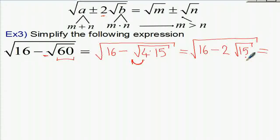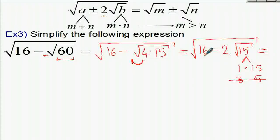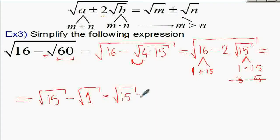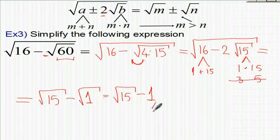We need two numbers whose product makes 15 and sum makes 16. Options: 1×15 gives sum 16, which works! Using the bigger one first: square root of 15 minus square root of 1. Since square root of 1 equals 1, the final answer is square root of 15 minus 1.